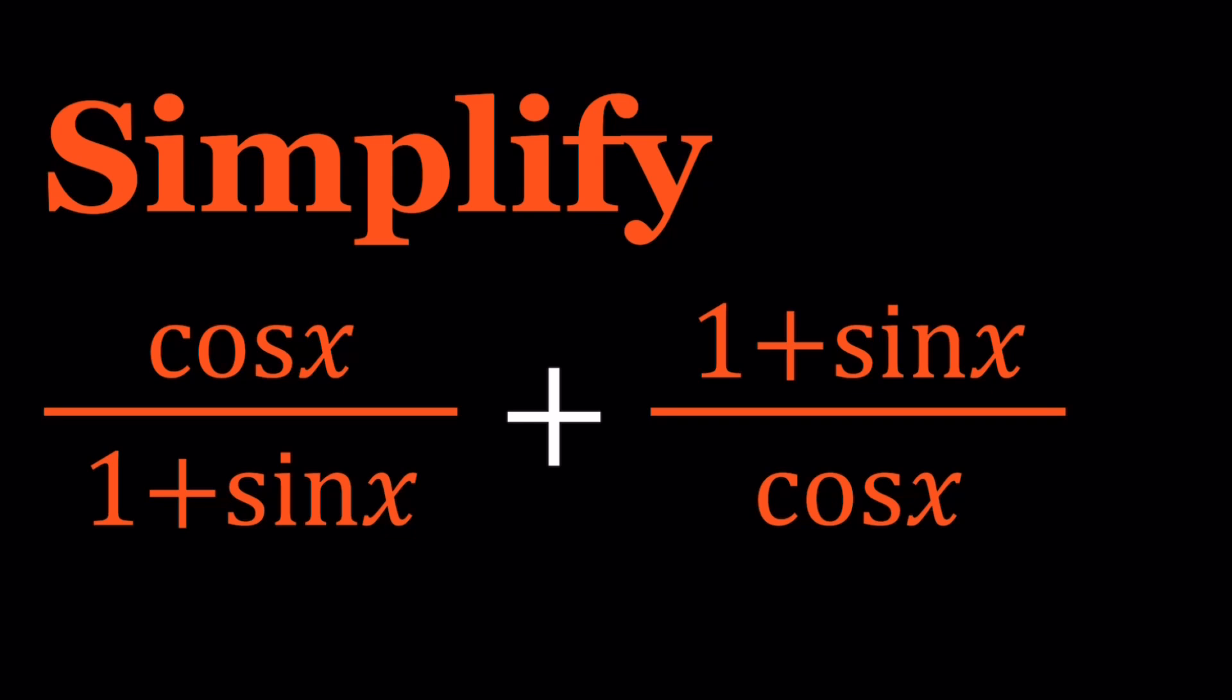And sometimes you never know what you're going to get, so there's an element of surprise. Unless it's a problem that asks you to verify an identity, in which case you know the answer, but it's still fun. Anyways, we have this expression, cosine x divided by 1 plus sine x, and the reciprocal of that expression, they're added together. What is going to come out of this? Let's go ahead and take a look.